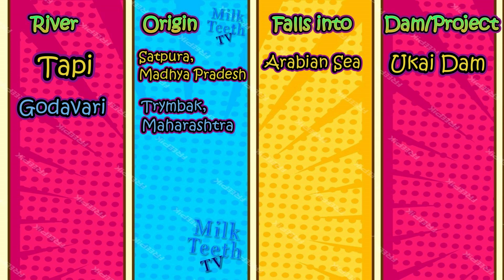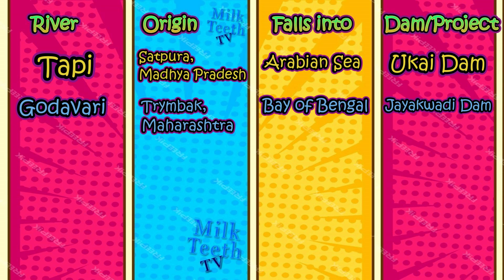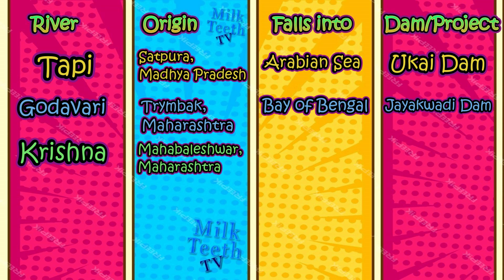Godavari falls into the Bay of Bengal. The Jayakwadi Dam is constructed over the River Godavari.